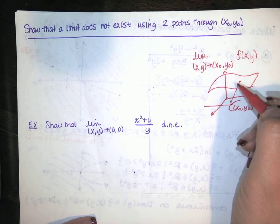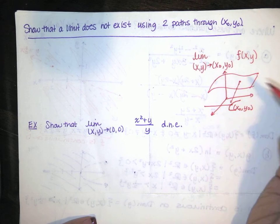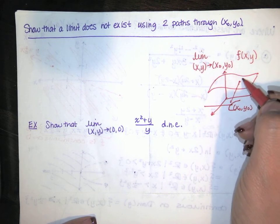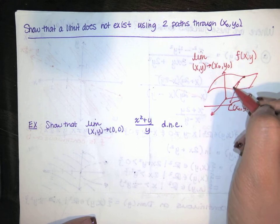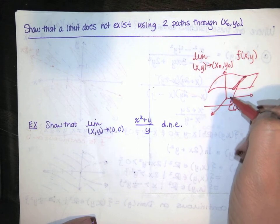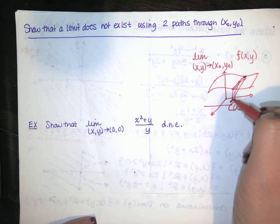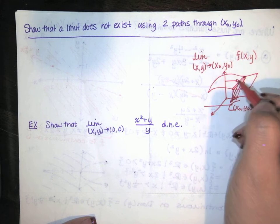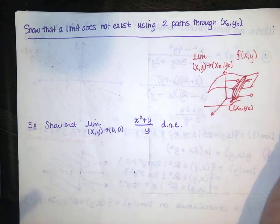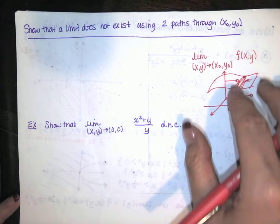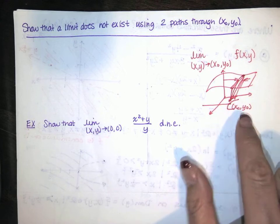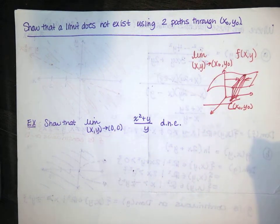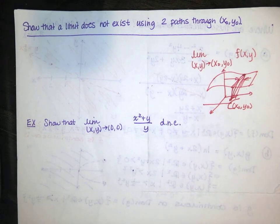I've drawn something where the limit exists — every direction, you're getting the same z value. But maybe there's a large crevice, and on one path the z values are way down here, and on another path the z's are approaching 3 or something. If you are approaching x naught y naught through two different paths and you get two different values for your z's, the limit doesn't exist.